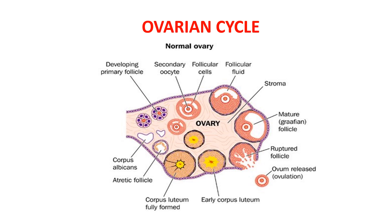Now, let us study about the ovarian cycle. This diagram shows the normal ovary with follicles of different stages of development. At birth in the female child, each ovum is surrounded by a single layer of granulosa cells. The ovum with this granulosa cell sheet is called primordial follicle. The granulosa cells secrete an oocyte maturation inhibiting factor that keeps the ovum suspended in its primordial state in childhood. After puberty, the entire ovaries along with some of the follicles within them begin to grow. The first stage of follicular growth is the moderate enlargement of the ovum itself, followed by growth of additional layers of granulosa cells in the follicles. These follicles are known as primary follicles.